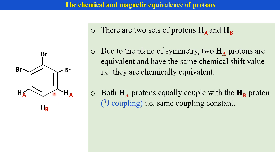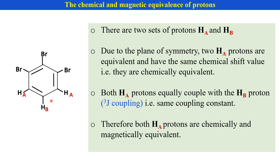In that case, this is a vicinal coupling, a ³J coupling. The chemical shift value is the same and also the coupling constant is the same. Therefore, HA protons are chemically and magnetically equivalent.